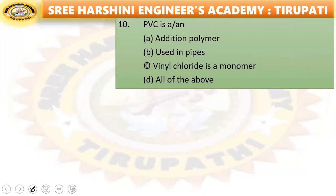Next: PVC is an addition polymer used in pipes, vinyl chloride is a monomer — all of the above? PVC is an addition polymer used in pipes, and vinyl chloride is its monomer. So all of the above — option D — is the right answer.